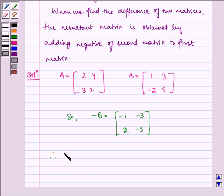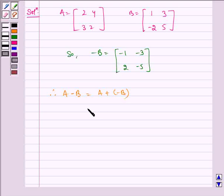Therefore, A minus B equals A plus negative B, which is equal to matrix [2, 4; 3, 2] plus matrix [-1, -3; 2, -5].